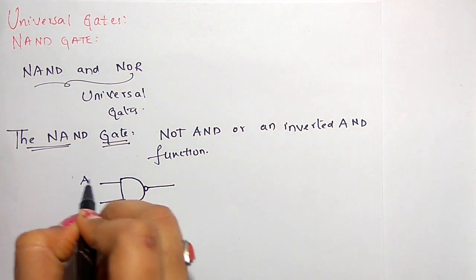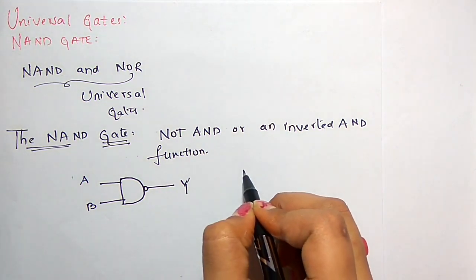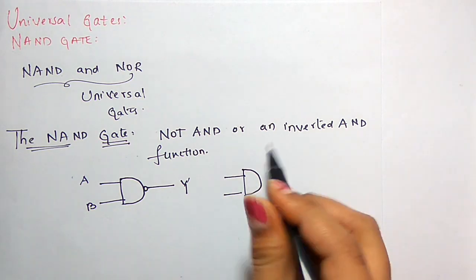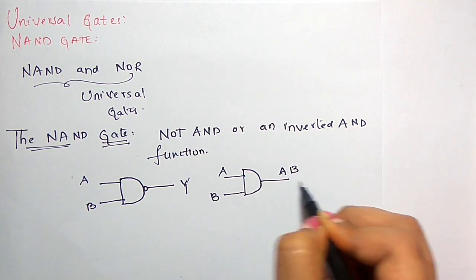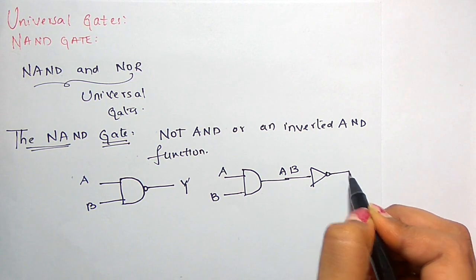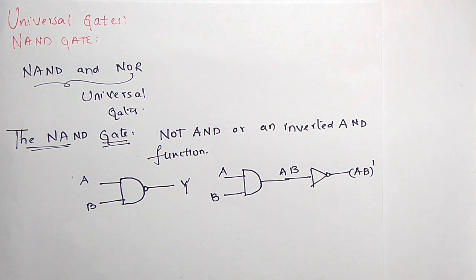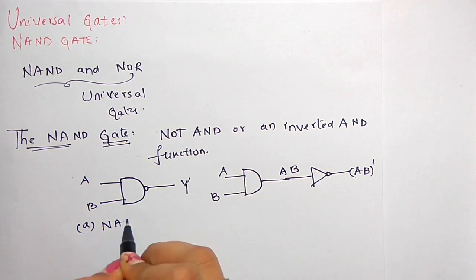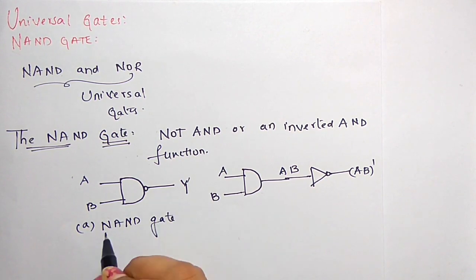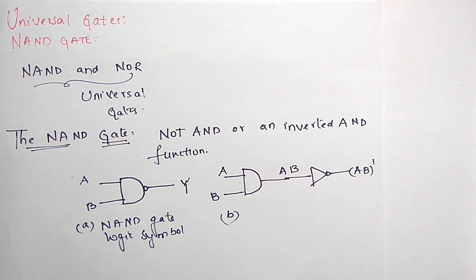This is input A, B and this is the output Y. This can otherwise be drawn as an AND gate with inputs A and B, where the output of the AND gate will be the product AB. If you apply the inverter operation, that gives inverted AND, so this will be AB whole complement. Figure A shows the NAND gate logic symbol, and figure B shows a separate AND gate and inverter being used to produce the NAND logic function.